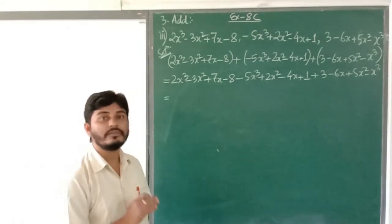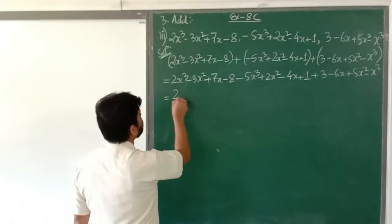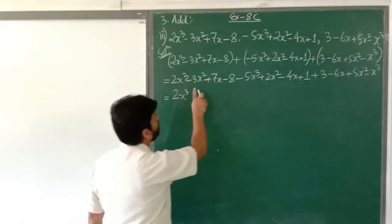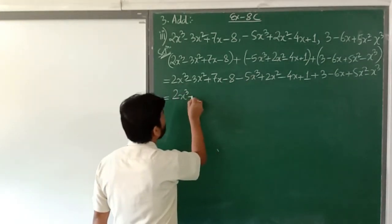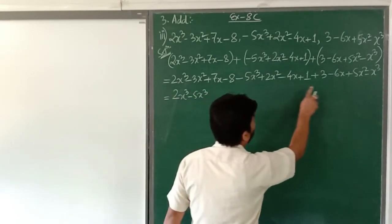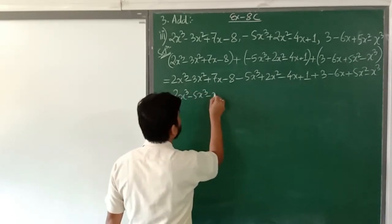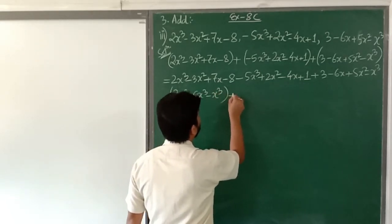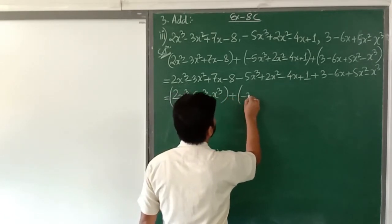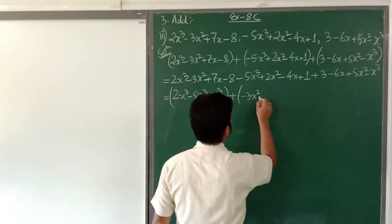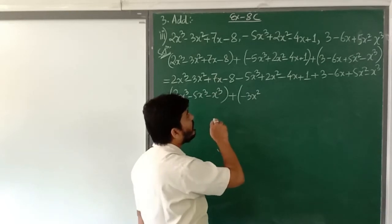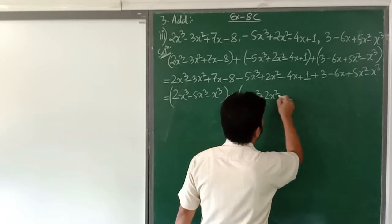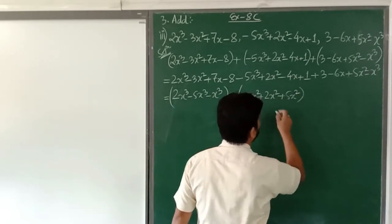Now we group or rearrange all the terms with like ones. First is x³: we get 2x³, then minus 5x³, and again minus x³. They are like terms so we group them. Then for x²: minus 3x² and then we get plus 2x² and plus 5x².